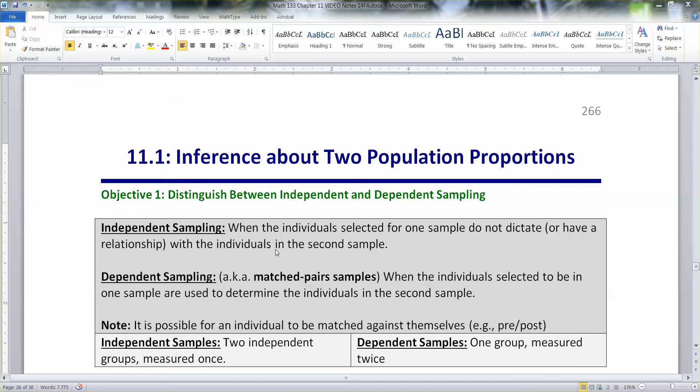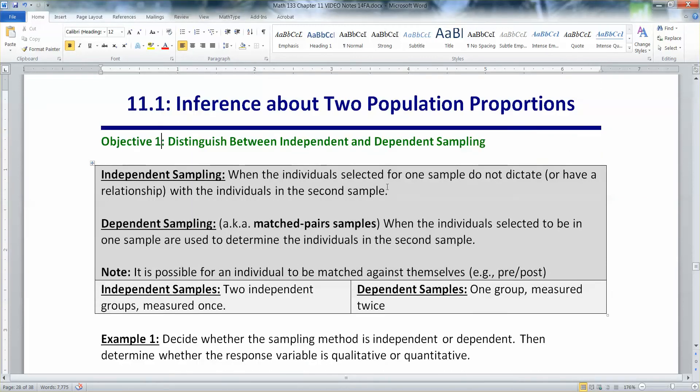In section 11.1, we're going to be working with proportions for two populations rather than for means for two populations. Now, keep in mind, we still have to understand the difference between independent and dependent sampling. So independent sampling is when the individuals selected for one sample do not dictate or have a relationship with the individuals in the second sample.